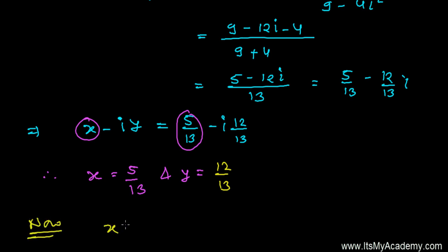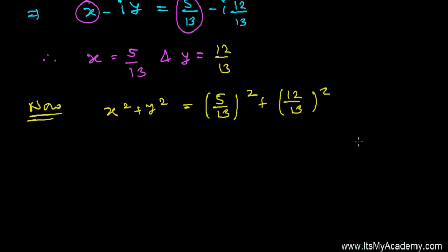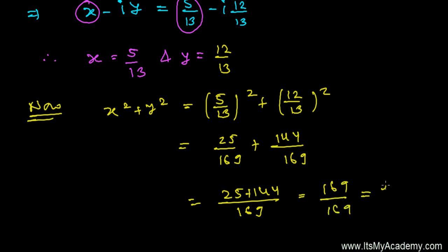Now x² + y² is going to be (5/13)² + (12/13)². 5² is 25, 13² is 169. Similarly, 12² is 144, 13² is 169. If you take the LCM, it's going to be (25+144)/169. That's going to be 169/169, which gives you 1.